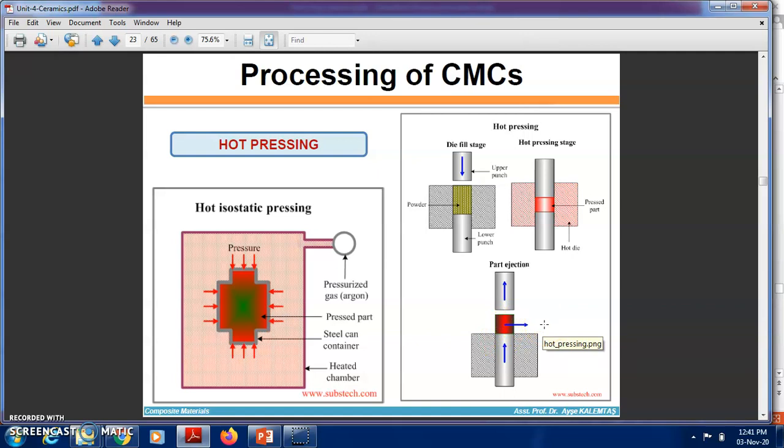Next is isostatic pressing. Here you can see the pressure is applied from all directions. It is inside a steel container. Due to the pressure, the component is converted into the required composite part.